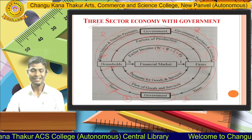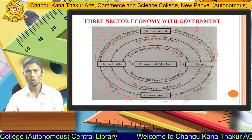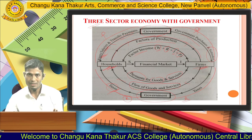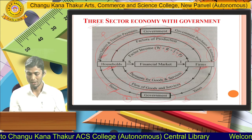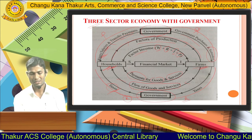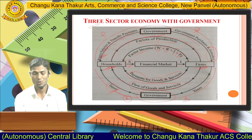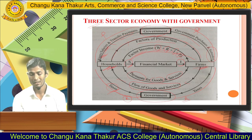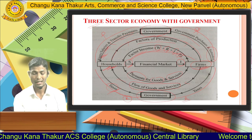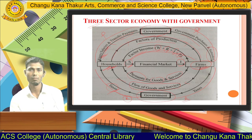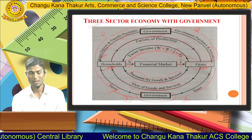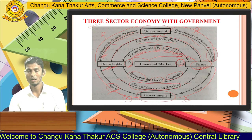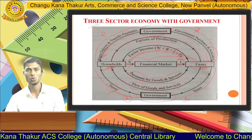This is why it is called a three-sector economy — we add the government to the previous model of households and firms. This represents a more realistic scenario. Savings done by households are deposited in the financial market and transferred to firms as investment. If savings and investment are equal, the economy is in equilibrium with no problem for development.